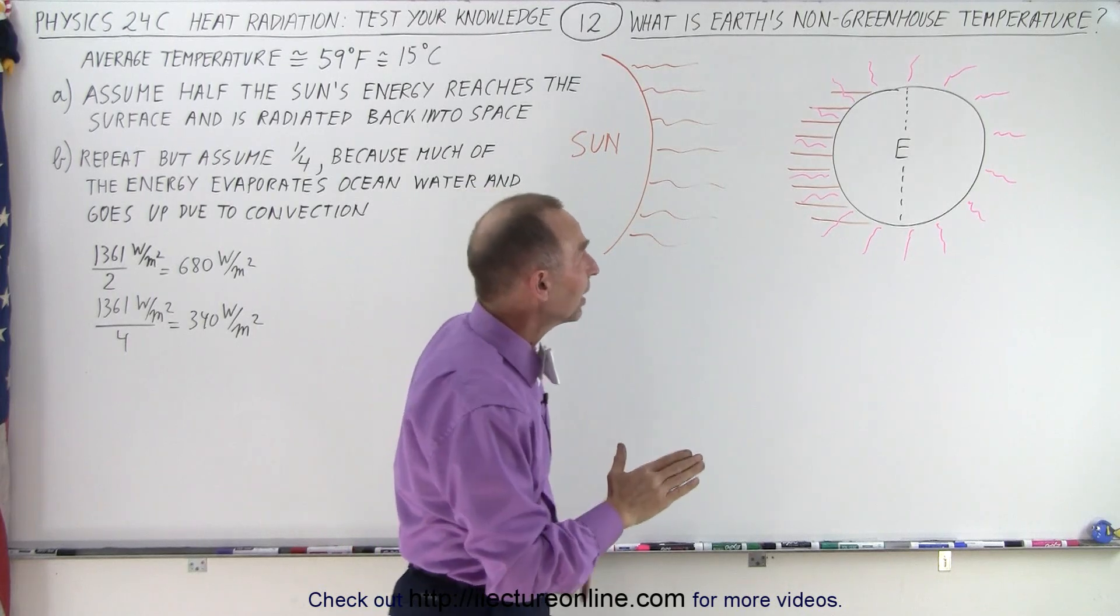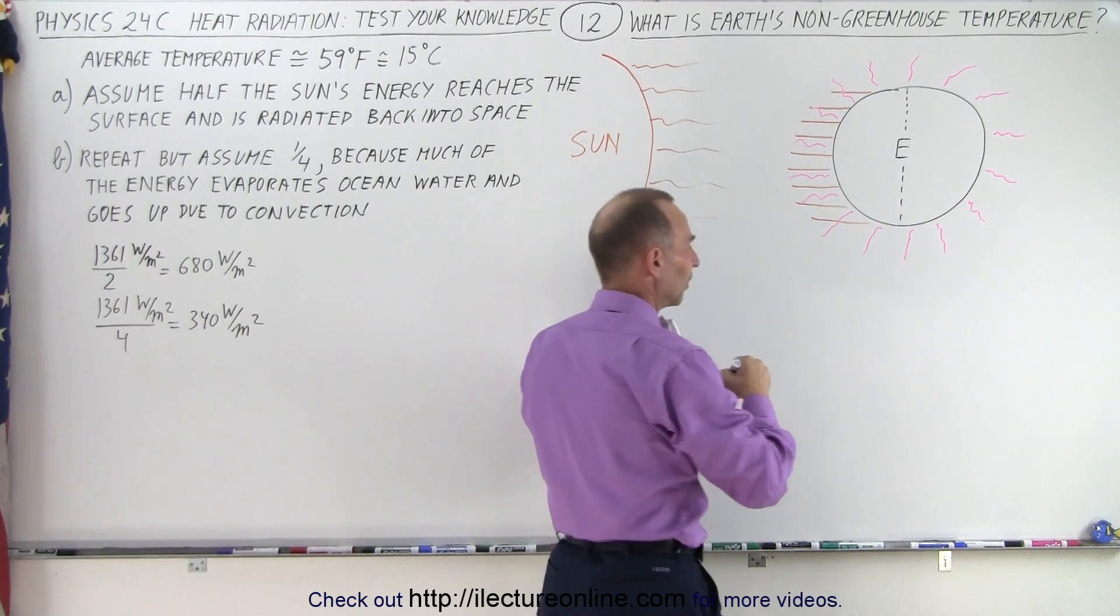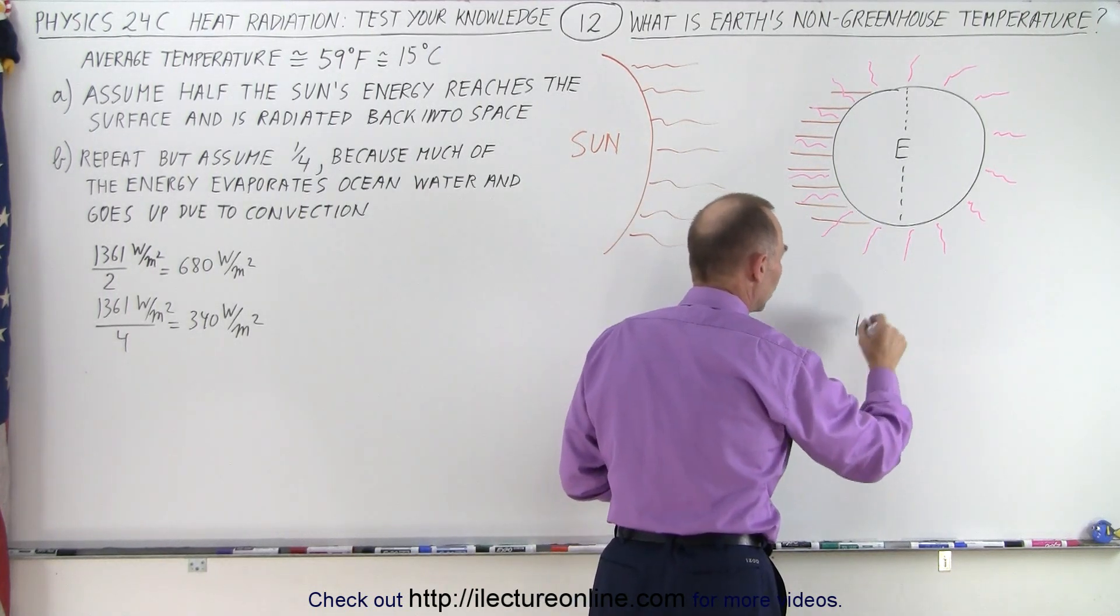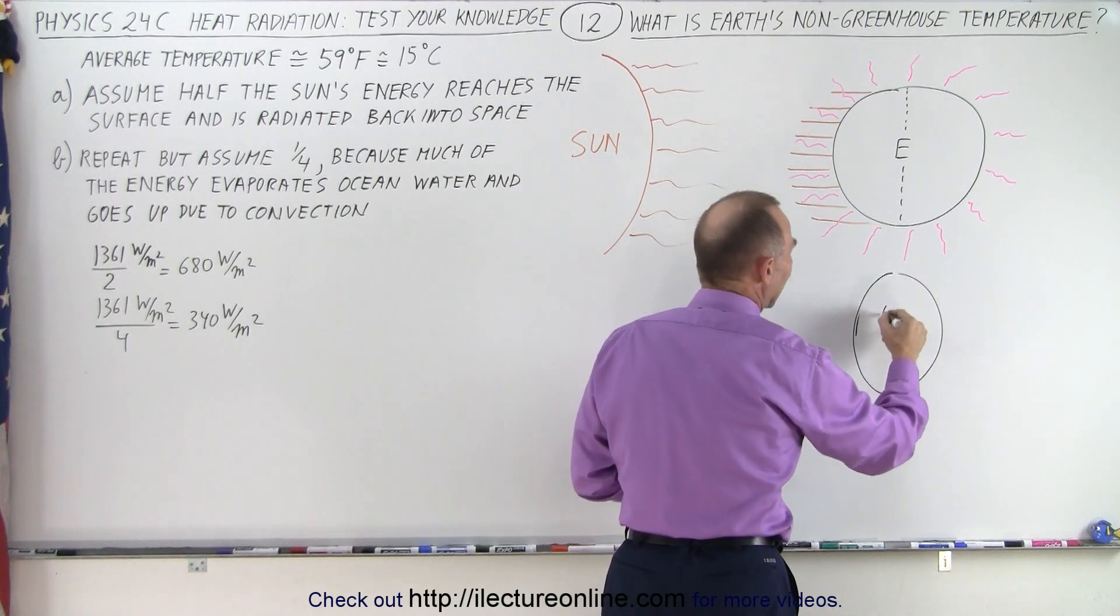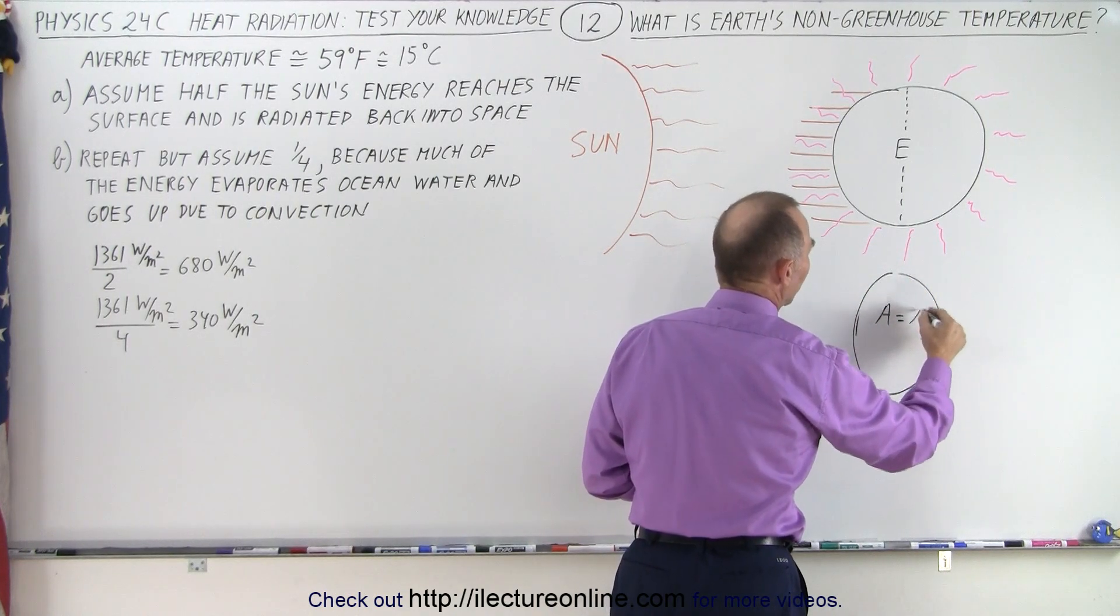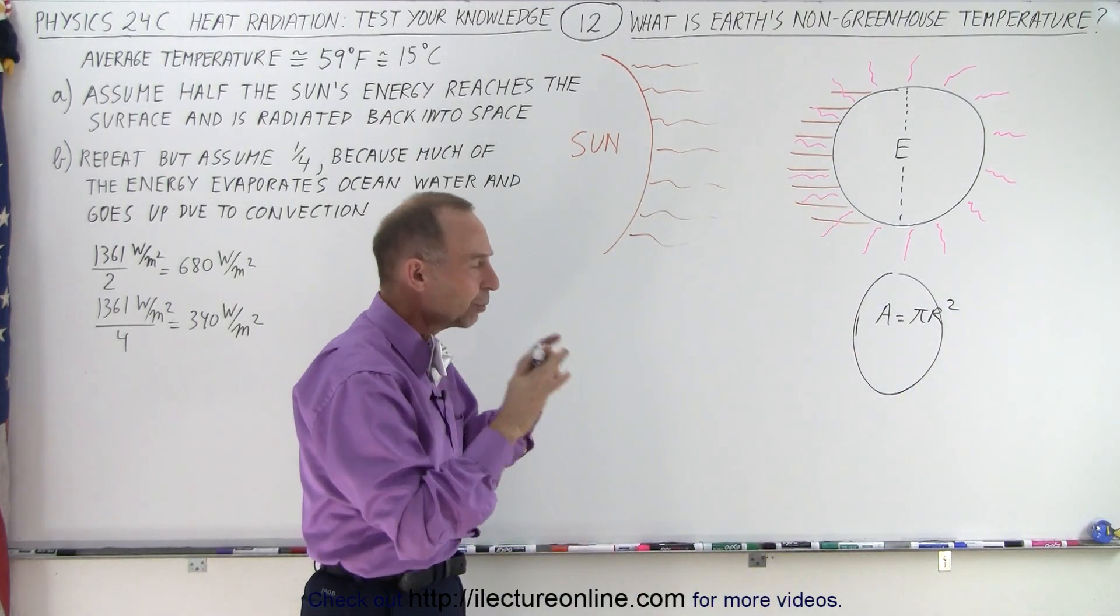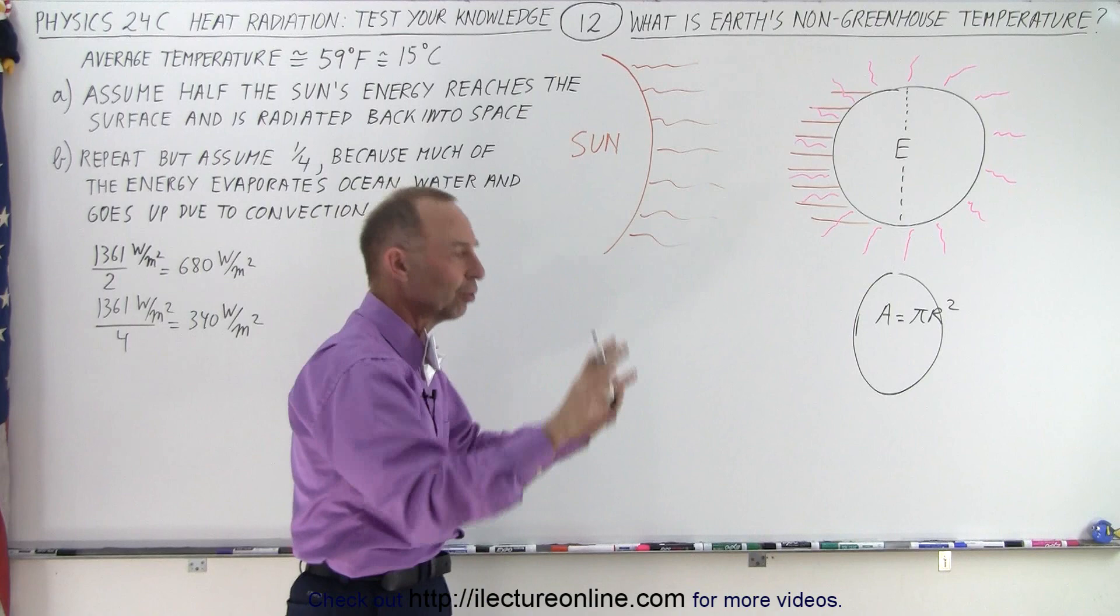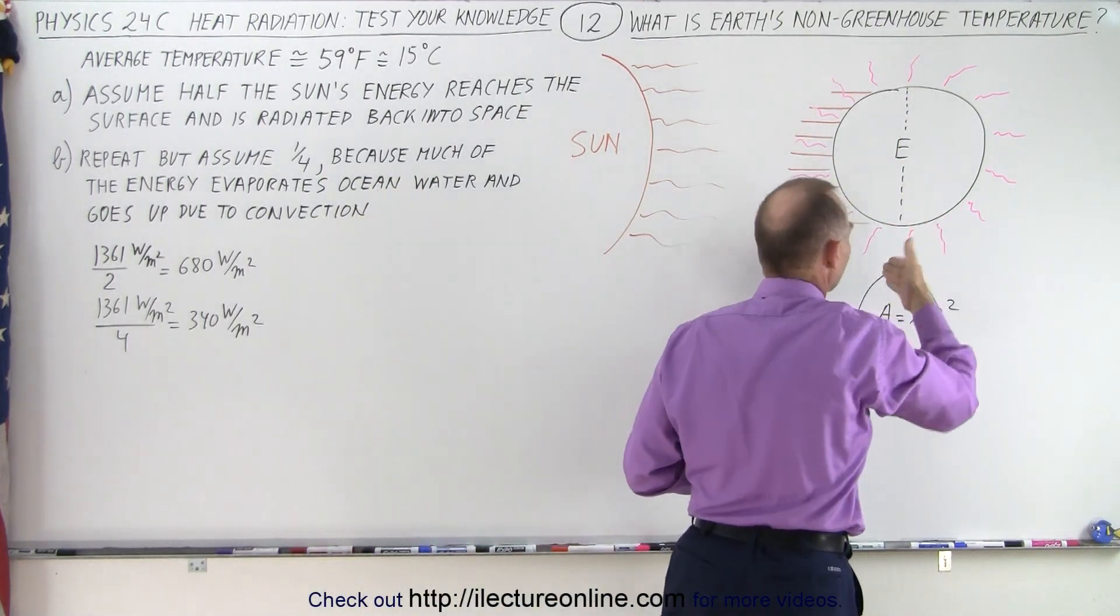But essentially the amount of radiation received by the Sun is as if the Earth was simply a circle, so a flat circle, and so that the area of that flat circle is simply equal to πr². So that is the amount of energy that is being received over a surface area equivalent equal to the cross-sectional area of the Earth.